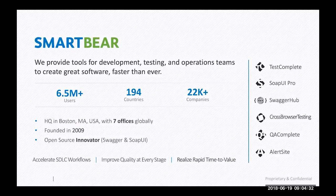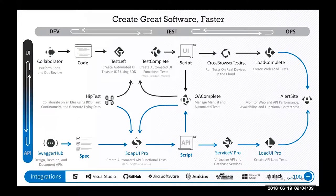but is also committed to the open source community with tools like Swagger, SOAP UI, and now HipTest Publisher, thanks to the latest acquisition of HipTest by SmartBear. Our product portfolio covers the entire product development life cycle, from development to tests and ops, both at the UI level and at the API layer.